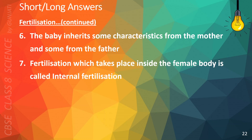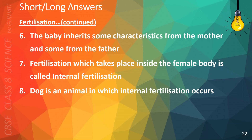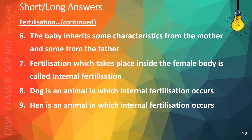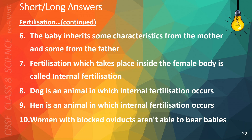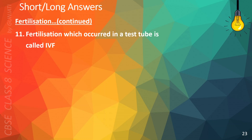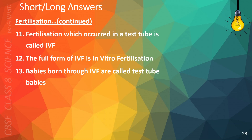The baby inherits some characteristics from the mother and some from the father. Fertilization which takes place inside the female body is called internal fertilization. Dog is an animal in which internal fertilization occurs. Hen is an animal in which internal fertilization occurs. Women with blocked oviducts are unable to bear babies. Fertilization which occurred in a test tube is called IVF. The full form of IVF is in-vitro fertilization. Babies born through IVF are called test tube babies.